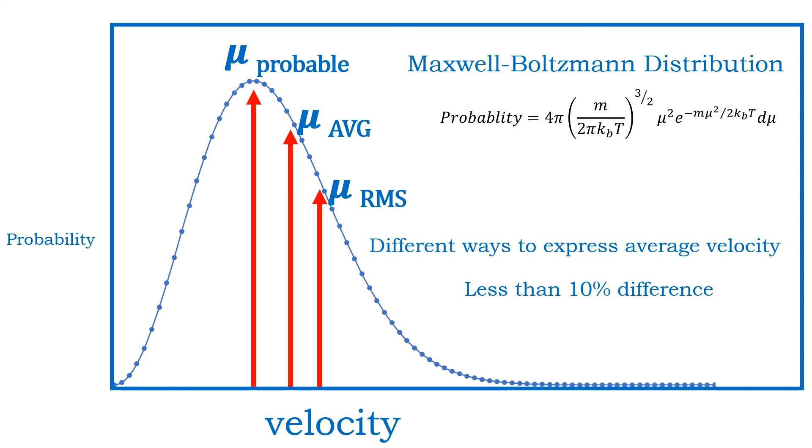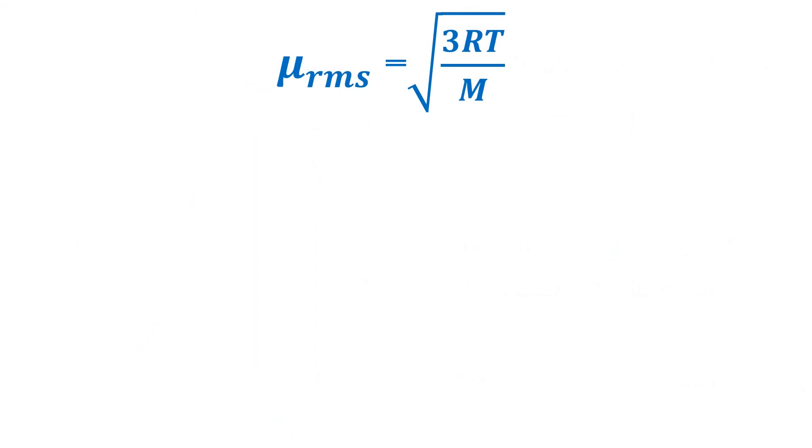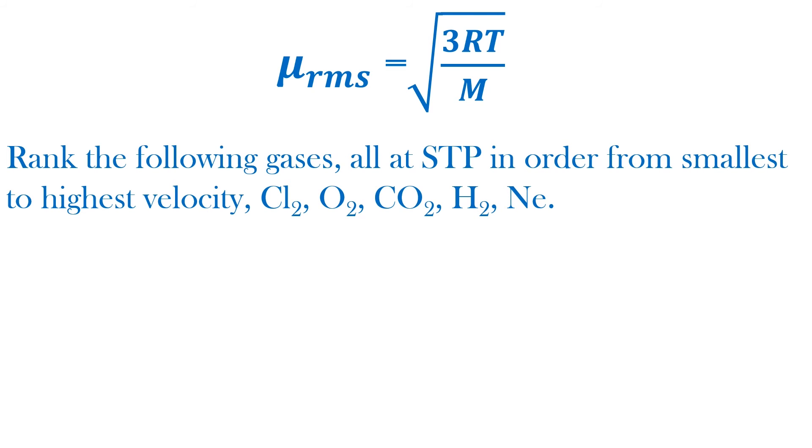In the end, there is less than a 10 percent difference between the average velocity and the root mean square velocity. The most important point is understanding the general trends from the equation. For example, let's rank the following gases all at STP in order of smallest to highest velocities.